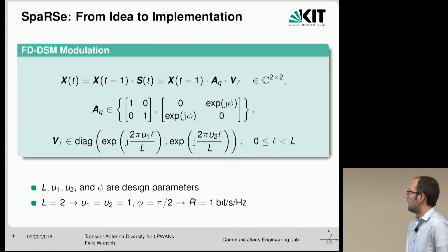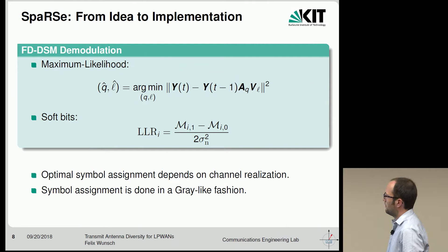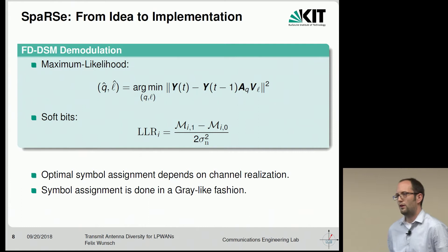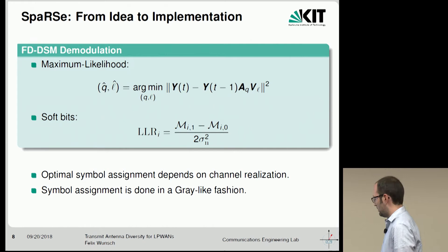For demodulation we use maximum likelihood, but we don't want hard decisions — we want soft bits. So we calculate approximate log-likelihood ratios bit-wise, which is really simple, and if you assume the same SNR for the entire packet, you can even omit the normalization term.